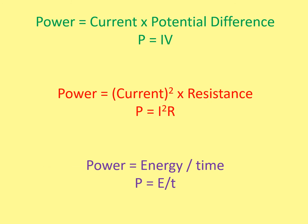Here are the equations for power — you will need to memorize all of them. The first is P = IV: power equals current times potential difference. The second is P = I²R: power equals current squared times resistance. The third is P = E/t: power equals energy divided by time, which is energy per second.